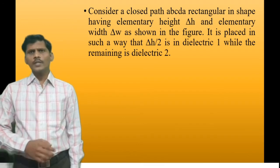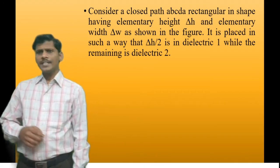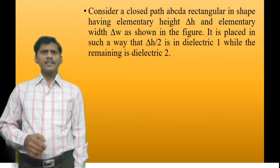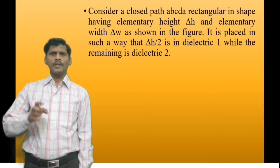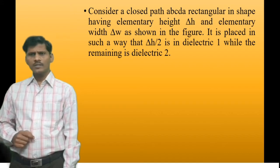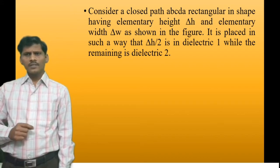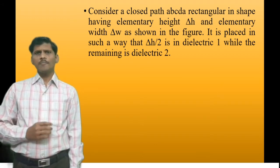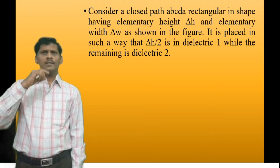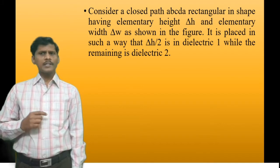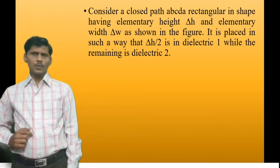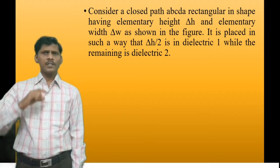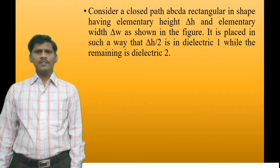Consider a closed rectangular path A-B-C-D-A, rectangular in shape as shown in the figure. The rectangular path has width delta-W and height delta-H. It is placed such that delta-H divided by 2 is in medium 1 and the remaining delta-H divided by 2 is in medium 2.